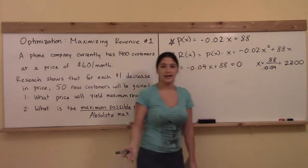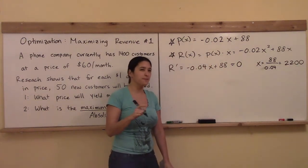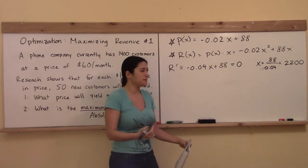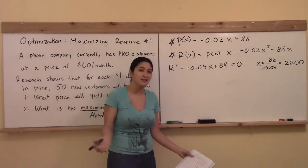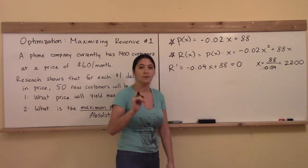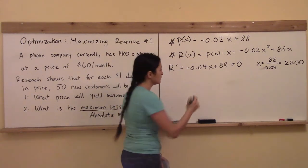and that leads us to say that x is equal to 88 divided by 0.04, and that magic number is 2,200. Remember, that might be a relative min. It might be an HPI. I don't really exactly know that it's a relative max until I perform the first derivative test.